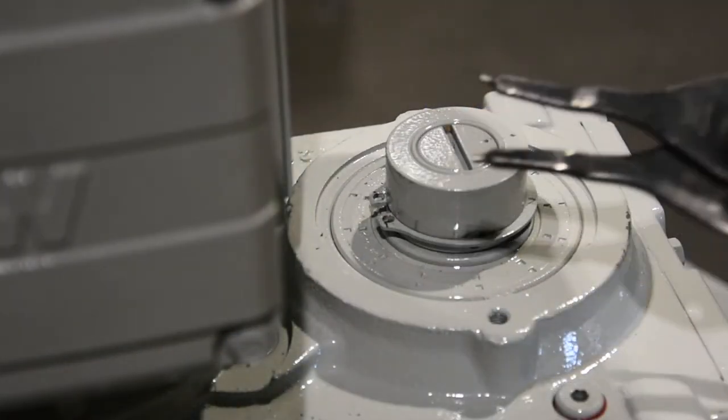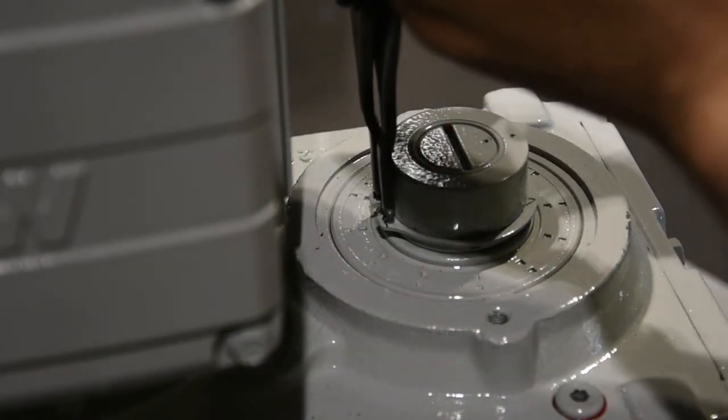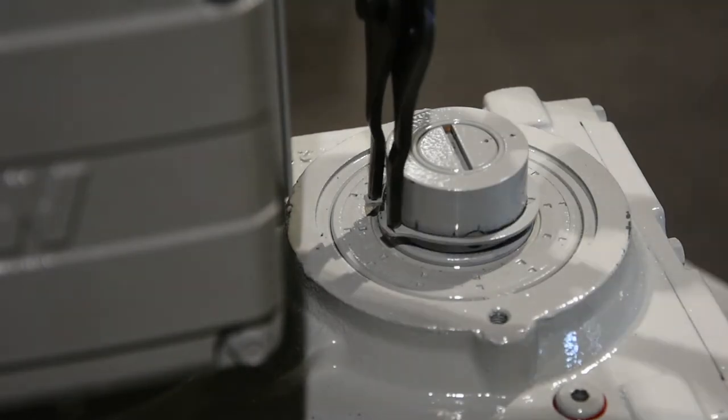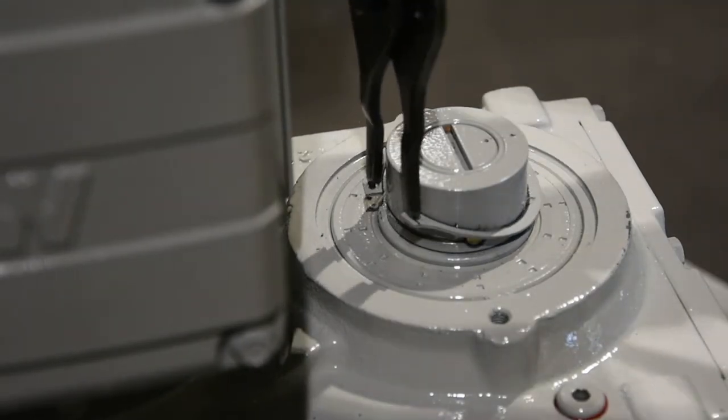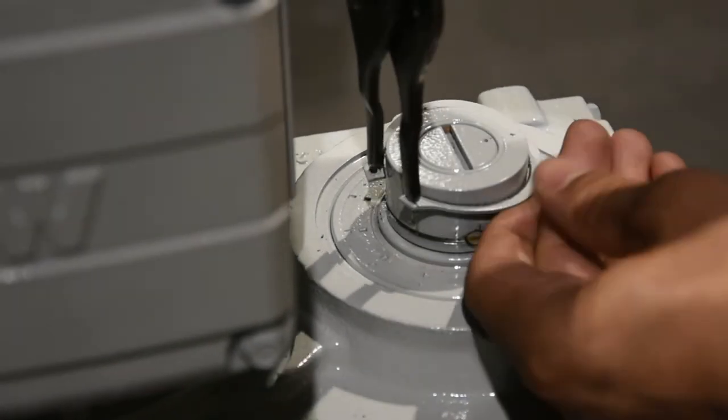With the snap ring pliers, slide the ring holding the shear pin in place out of the groove. Take extra care when removing the snap ring as it may snap off of the pliers, becoming a projectile hazard.